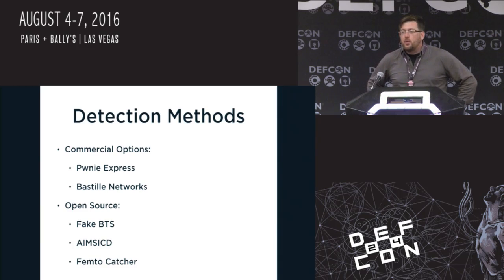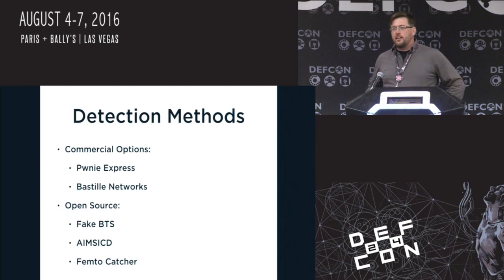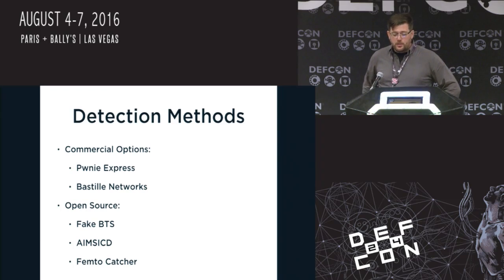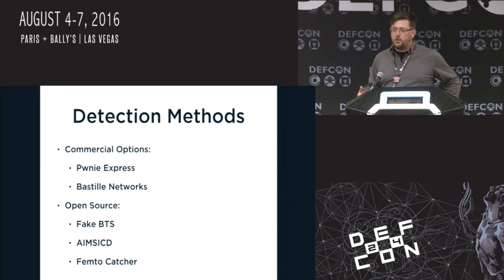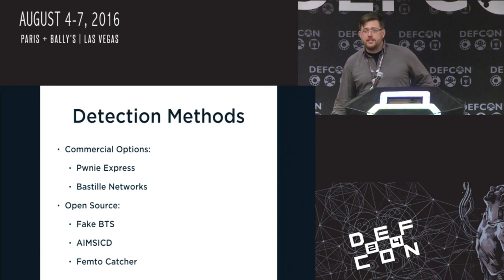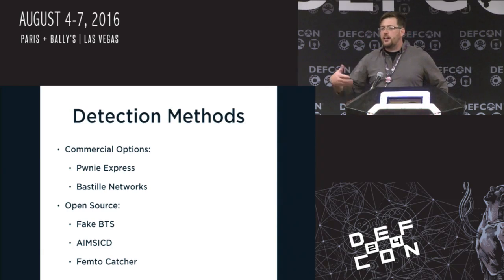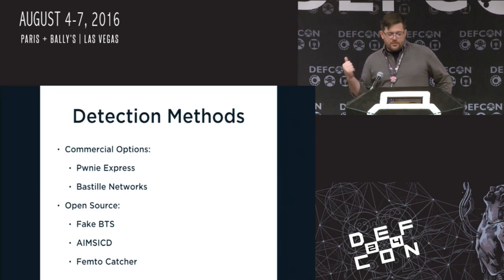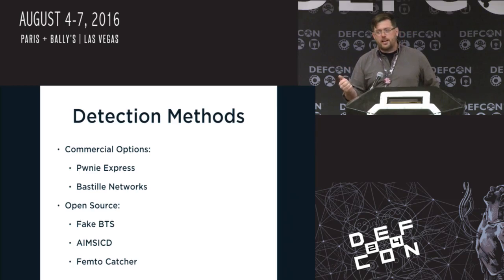Current detection methods: both Pony Express and Bastille Networks have offerings of which this project is a subset. Open source options include Fake BTS — the original inspiration — a collection of shell scripts using Wireshark, Airprobe, and Calibrate. The Android IMSI Catcher Detector installs on your phone and interacts with the cell radio. Femto Catcher is very close in function to the Android IMSI Catcher Detector but specifically for catching femtocells and only effective for phones on Verizon's network.